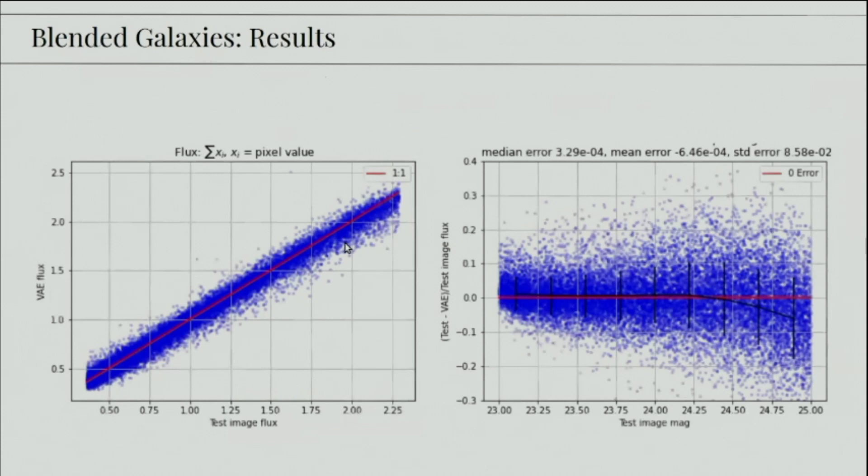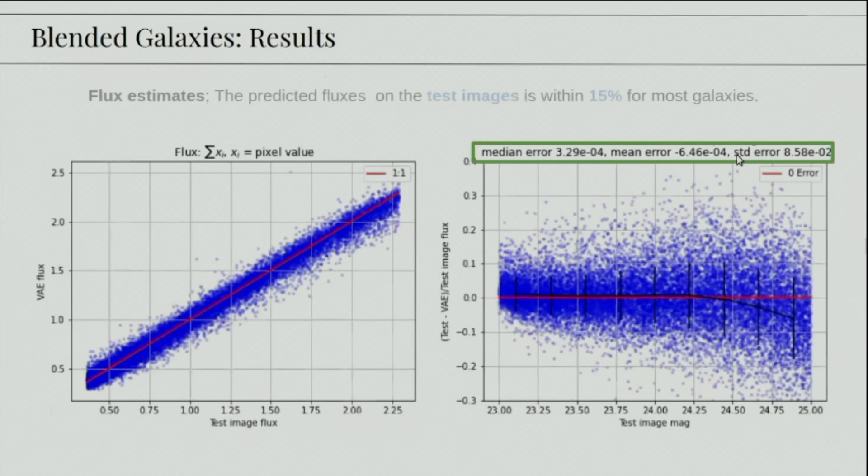And finally, our results on the reconstruction of the blended galaxies using the flux, which is the sum of all the pixels. So here on x-axis is the test image flux, and here is the prediction by the VAE. Then we scale it in the right plot, and we see that most of them are within 15%, where the mean error is 10 to the power minus 4, and the standard error is within 10%. So we see that the predicted fluxes on the test image within 15% for most galaxies.